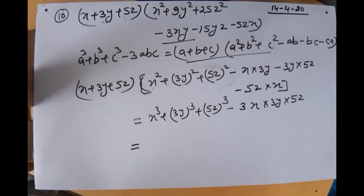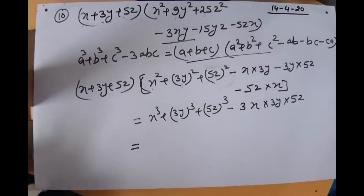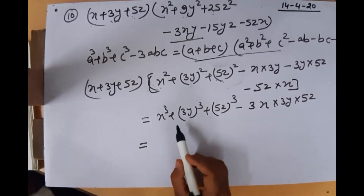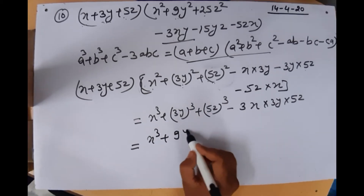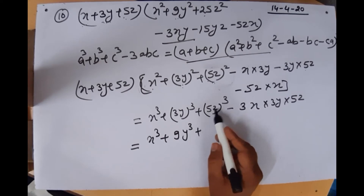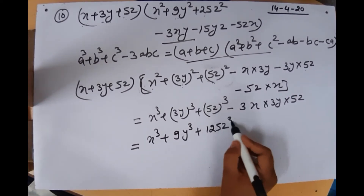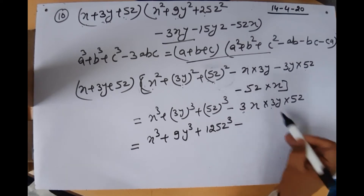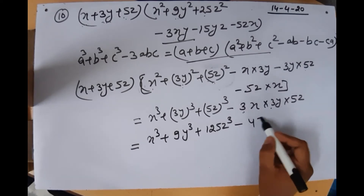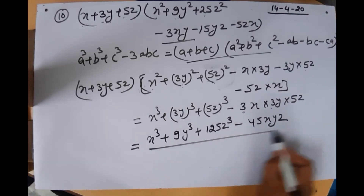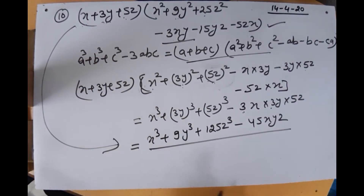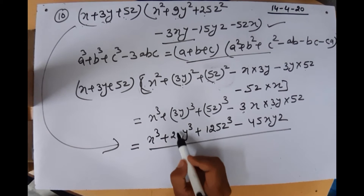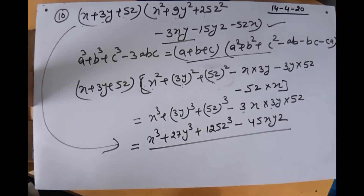So the answer is: a³ + b³ + c³ − 3abc = x³ + (3y)³ + (5z)³ − 3·x·3y·5z = x³ + 27y³ + 125z³ − 45xyz. This is the expansion and the final answer.